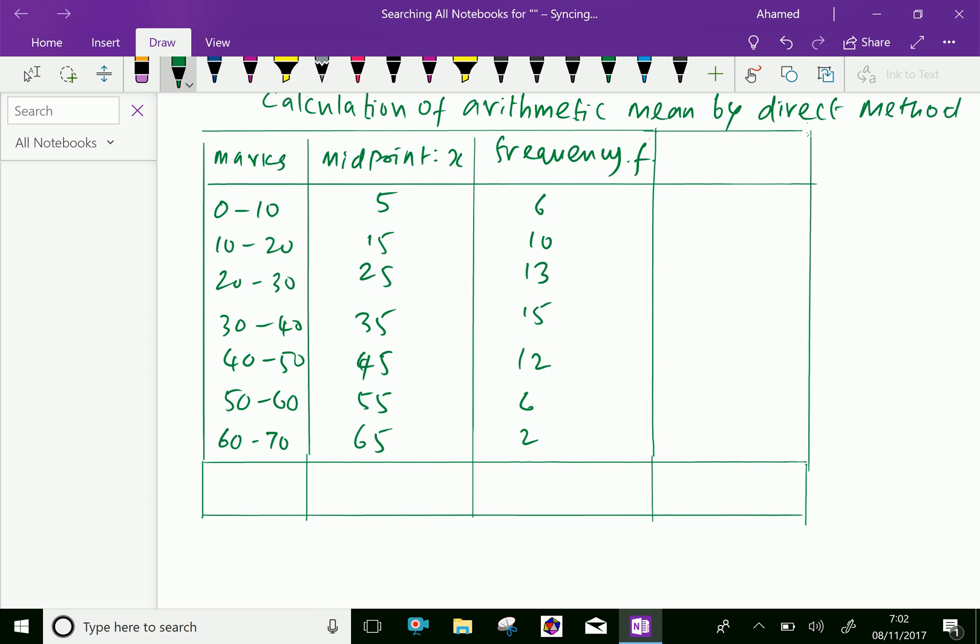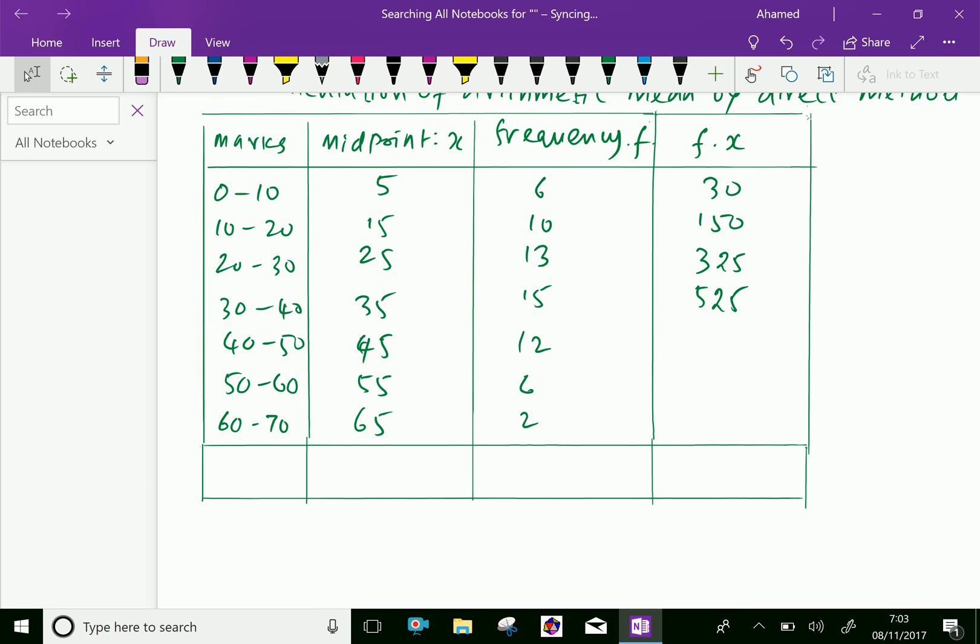Now let us calculate the product of midpoint and frequency, that is fx. F into x: 6 times 5 equals 30, 15 into 10 is 150, 25 into 13 equals 325, and 35 into 15 equals 525.